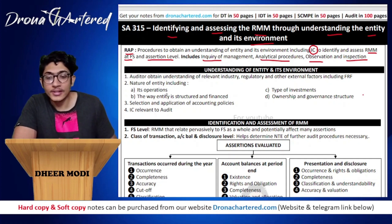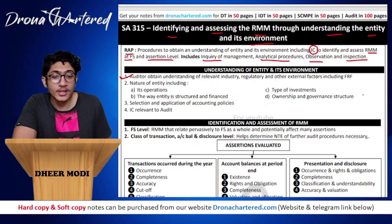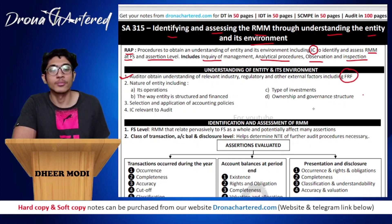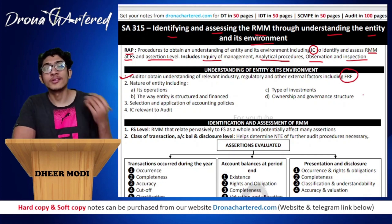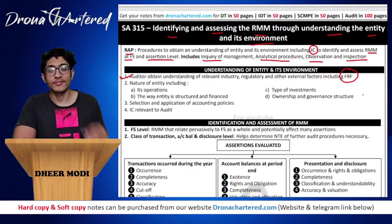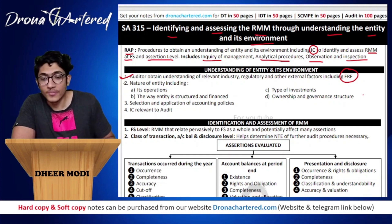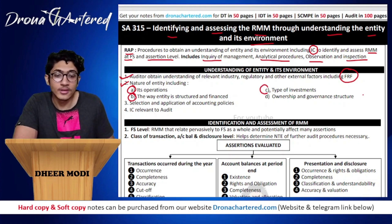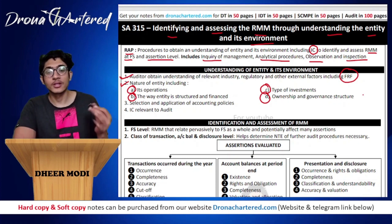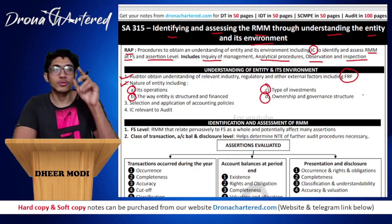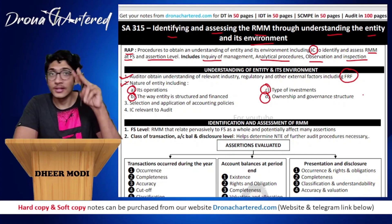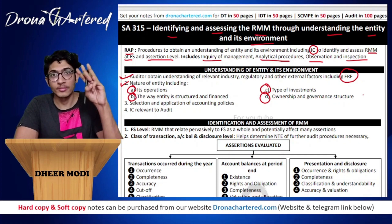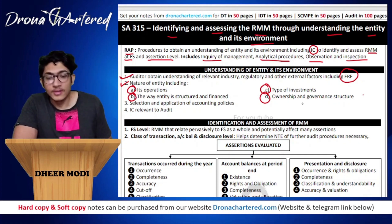For understanding of entity and its environment, the auditor needs to obtain understanding of relevant industry, regulatory and other external factors including the financial reporting framework. This covers the nature of the entity including its operations, the way the entity is structured and financed, the type of investments made, and the ownership and governance structure. So there are four aspects: operations, structure and financing, type of investments, and ownership and governance structure.